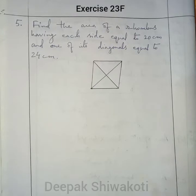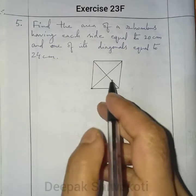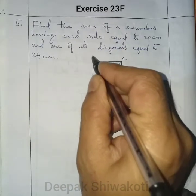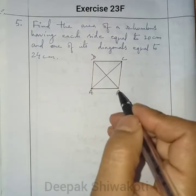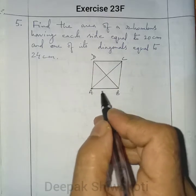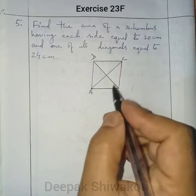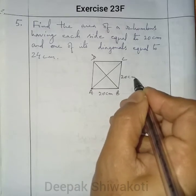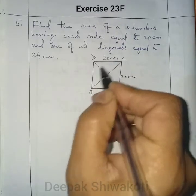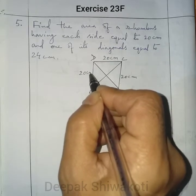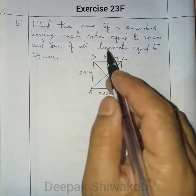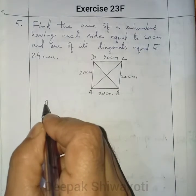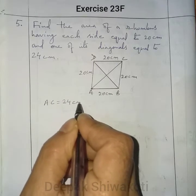This is the figure of the rhombus ABCD. Each side is equal to 20 centimeter — this side 20 centimeter, this one 20 centimeter, 20 centimeter, and 20 centimeter. One of its diagonals, suppose AC, is equal to 24 centimeter.